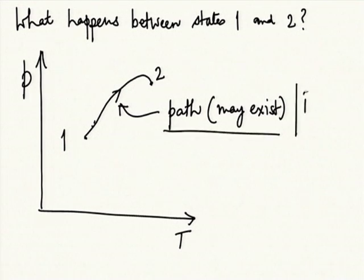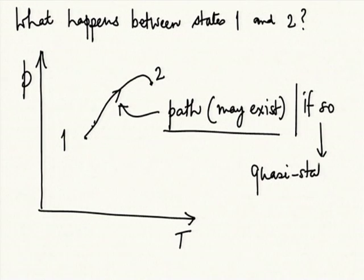If so, we call the process a quasi-static process. A quasi-static process means that at any instant during the process, you will find the system to be in a state of equilibrium somewhere in state space. It need not be on a straight line joining the two states — it can go all over the state space and come back. But every time, the state can be uniquely defined, meaning all properties can be uniquely defined.